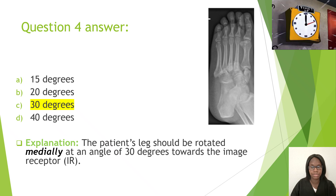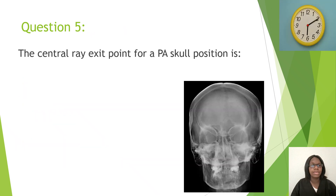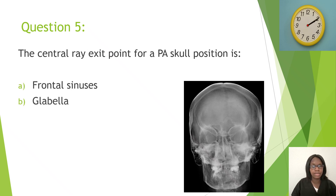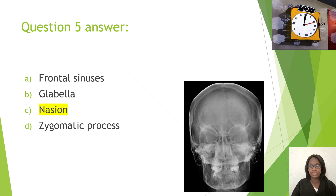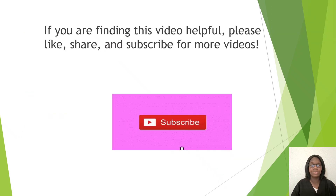Question five: The central ray exit point for a PA skull position is — A, frontal sinuses; B, glabella; C, nasion; D, zygomatic process. The correct answer is C, nasion. If you are finding this video helpful, please like, share, and subscribe for more videos.